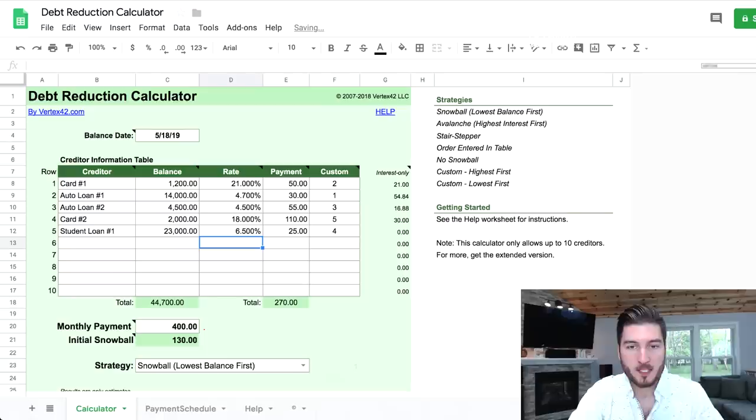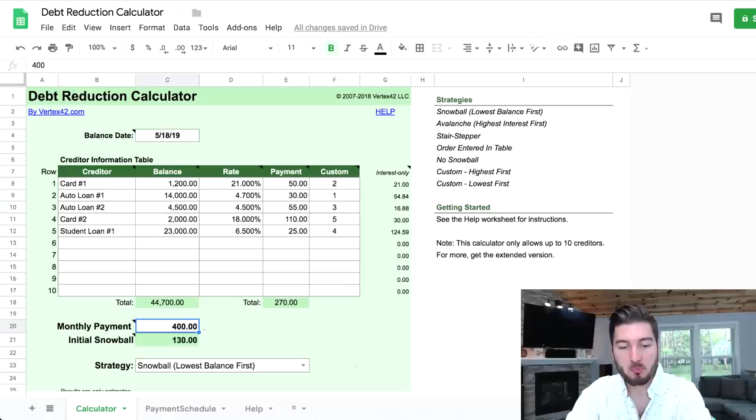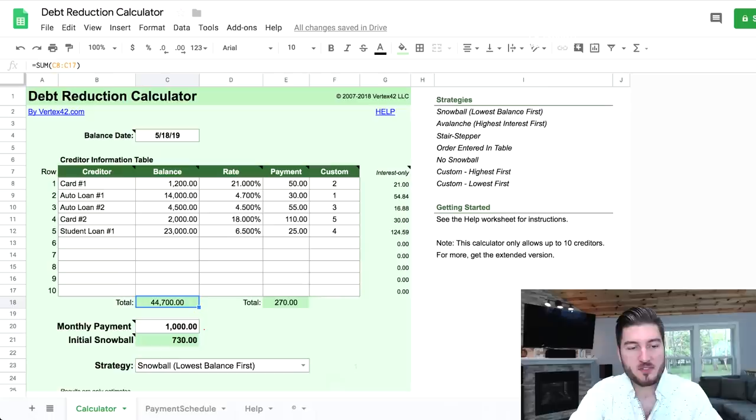Remember, the debt snowball is the lowest balance first. This spreadsheet is going to tell us what our monthly payment is. If you remember watching all my other videos where I talk about you need to have a written budget and track every single dollar, this is why: so you know exactly how much you can put towards your debts. Let's say this couple has $1,000 to put towards these monthly debts. These debts add up to be $44,700, and the minimum payments are around $270 a month.